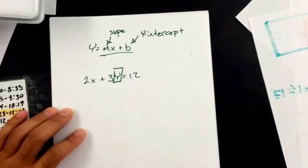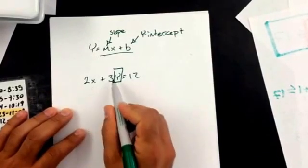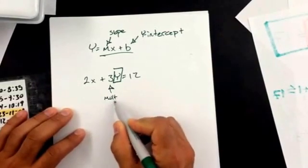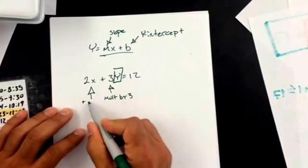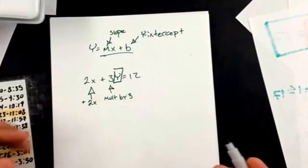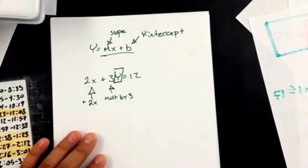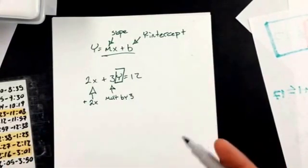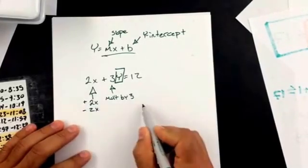To isolate the y, I'm going to undo everything that's happening to the y right now. So I'm going to ask myself, what's happening to the y right now? Well, to the y, I am multiplying by 3 and I am adding 2x. So I want to do the opposite of multiplying by 3 and adding 2x. Remember, when we're trying to solve, we do the reverse order of operations. So we're going to get rid of the addition first. To get rid of this addition, I'm going to subtract 2x from each side.